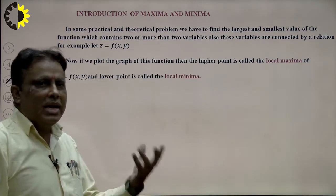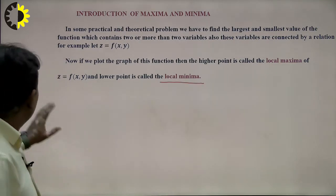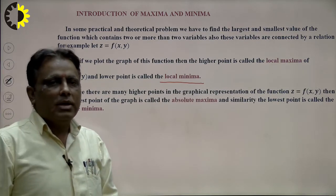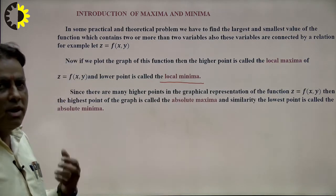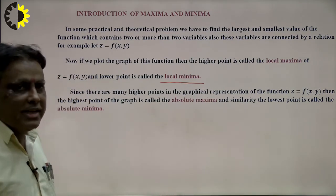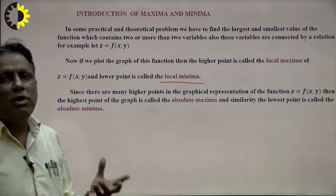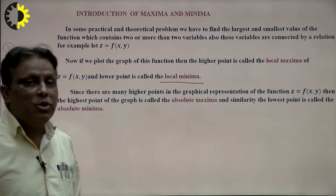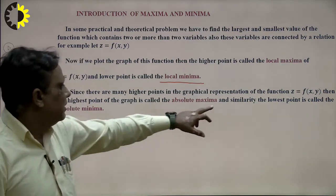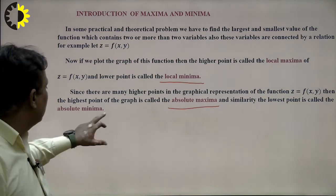At a particular value, that is known as the local minimum value. Students should keep this in mind when solving future problems. Since there are many higher points in the graphical representation of z = f(x,y), the highest point of the graph is called the absolute maxima. Similarly, the lowest point is called the absolute minima.